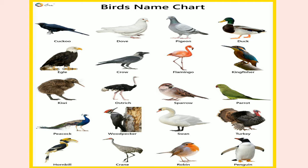The big feathers on the wing and tail are called flight feathers. The size and shape of a bird's wings depends on the type of flying it does. Birds have four types of feathers: down feathers, body feathers, flight feathers and tail feathers.